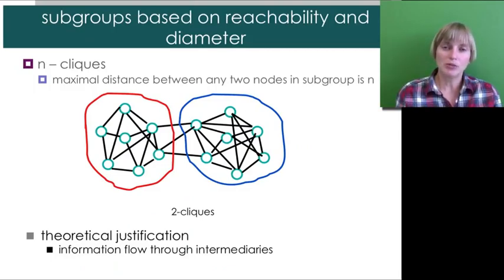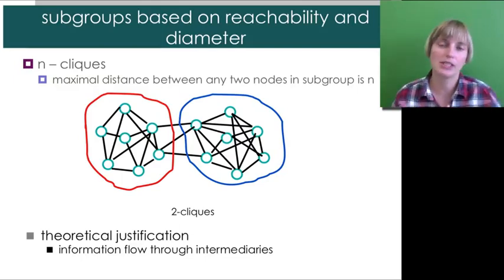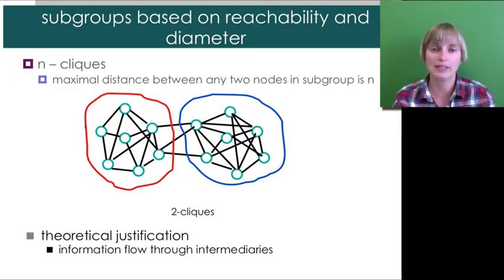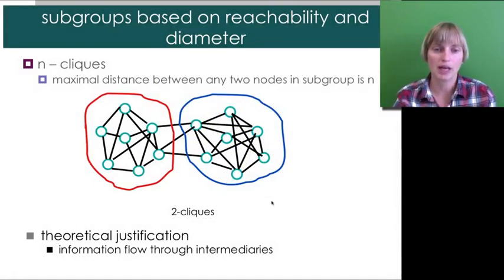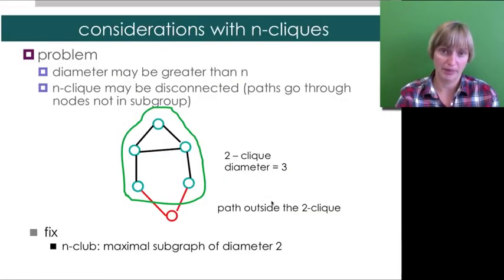As I mentioned before, sometimes you want to just look for potential for information to flow. In this case, we may just be interested in a set of nodes such that, for example, any node is reachable from any other node within two hops. And so, in this case, these are two two cliques. Because everyone can reach everyone else within just two hops.